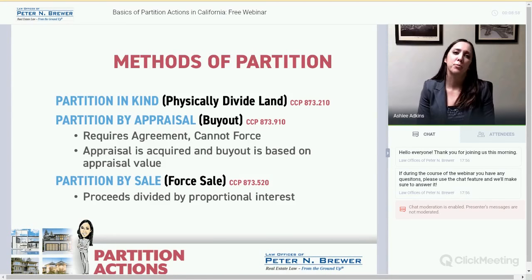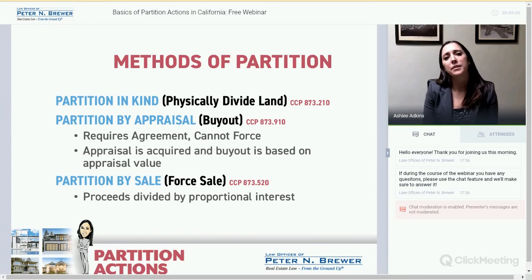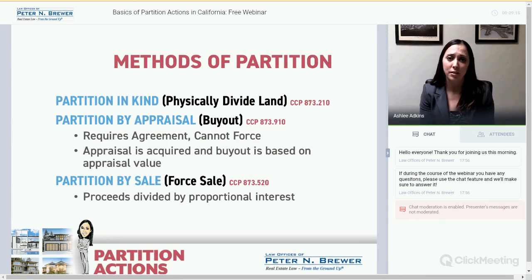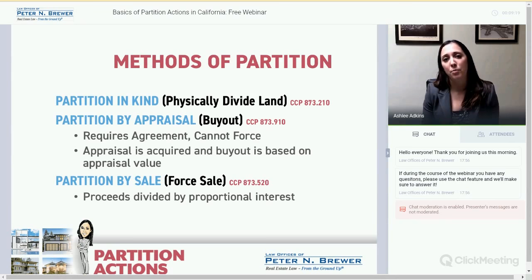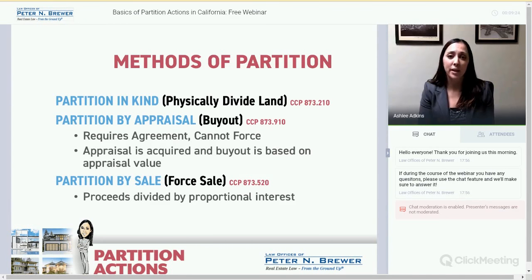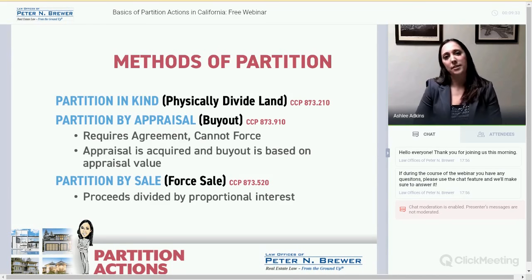Second, partition by appraisal. This is very common with inherited properties or siblings owning property together. This type of division requires agreement by all parties. If one party can't afford the property or wants to sell, the other co-owners can agree to buy them out. The judge will require an appraisal, and the ones buying out the proportional interest pay that price.